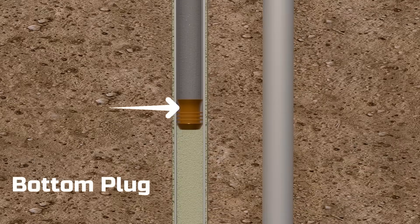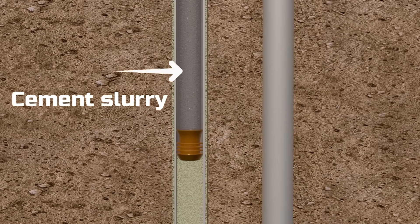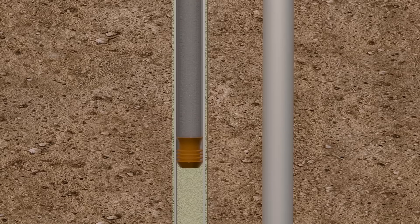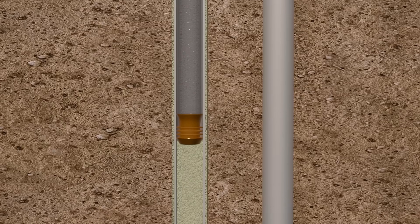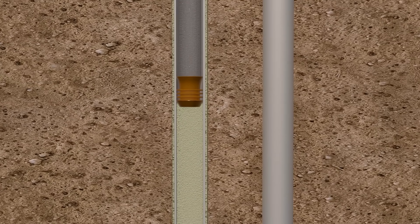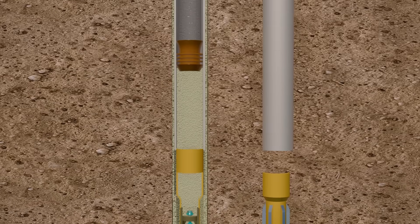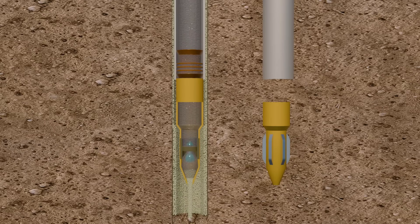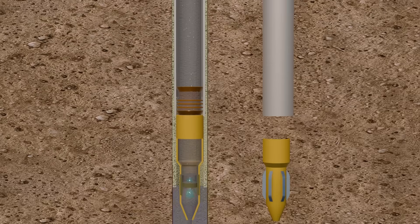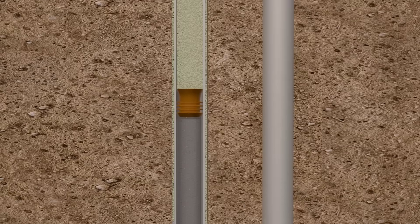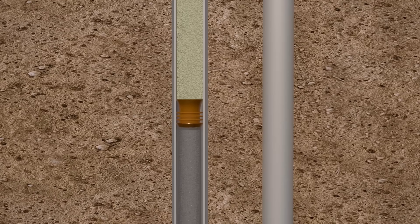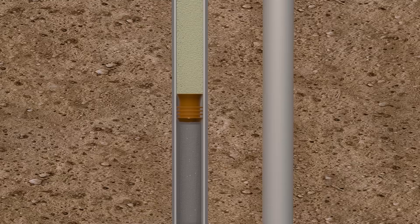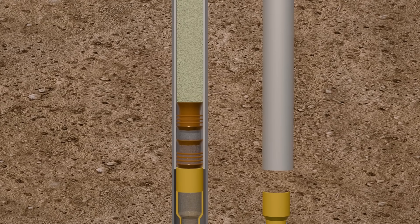Next, a bottom plug is inserted into the casing, and cement slurry is pumped in behind it, pushing the bottom plug downwards. The bottom plug serves two purposes. It cleans the inside of the casing to prevent cement slurry from mixing with mud, and it forces mud out through the annulus. When the bottom plug reaches the bottom of the casing, it locks in place, allowing cement slurry to flow into the annulus. Once the cement is filled, a top plug is inserted into the casing and pushed down using drilling mud. This top plug cleans out the remaining cement inside the casing and pushes it into the annulus. Finally, the top plug sits on top of the bottom plug, locking it securely and preventing the cement from flowing back into the casing.